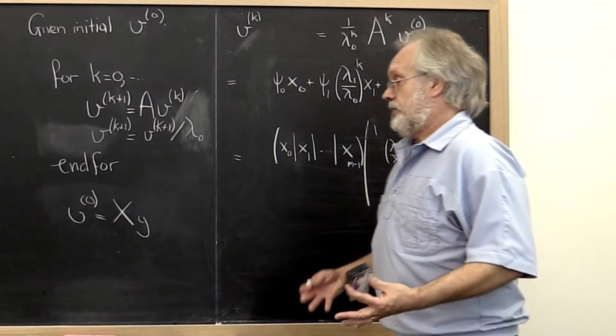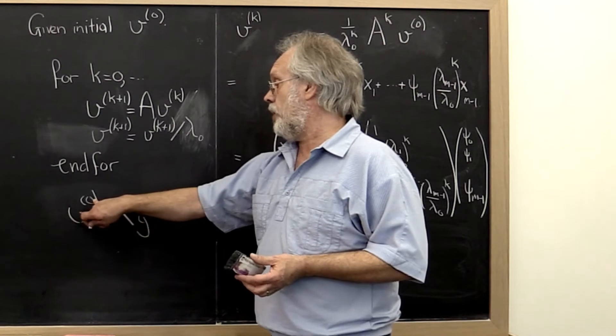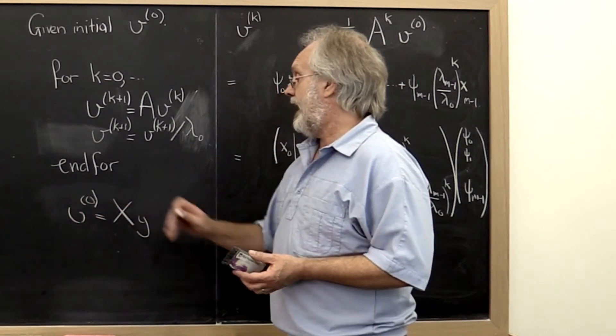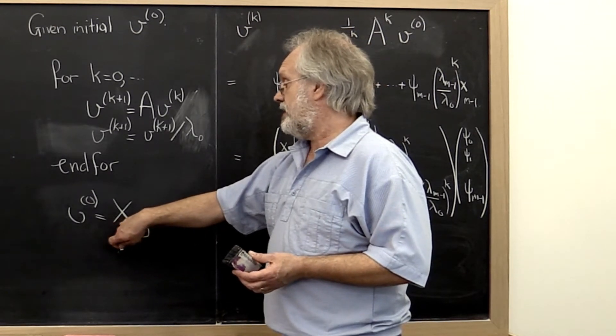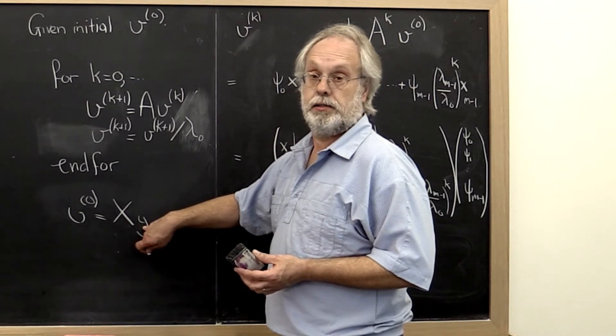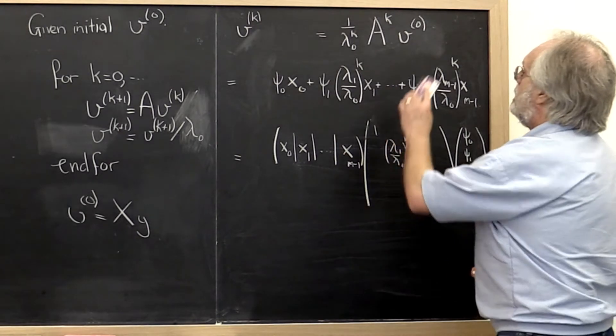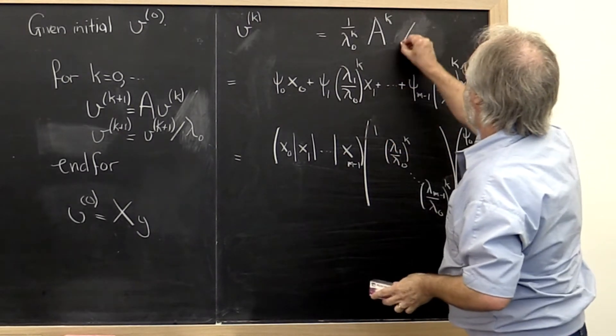It became convenient to say, let's take our original vector v0 and let's view it in the basis formed by the eigenvectors of matrix A. So let's write it instead as x times some vector y. Now what does that mean? That means that our vector v0 is replaced by x times y.